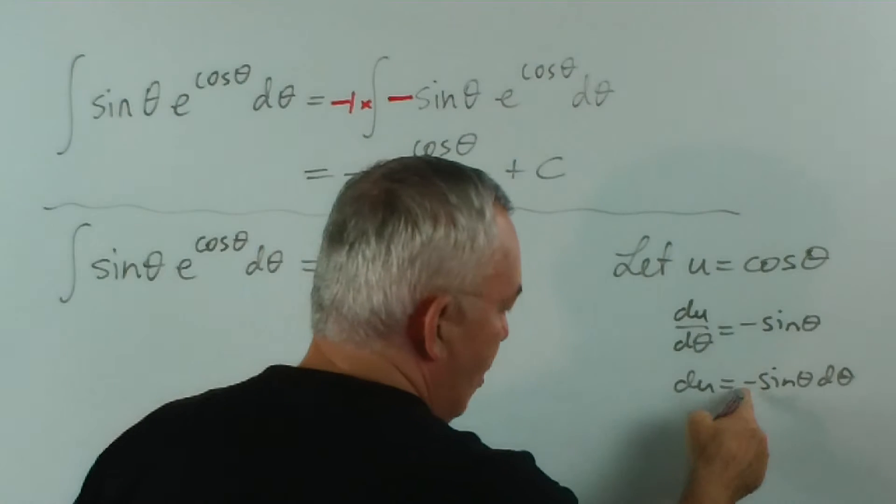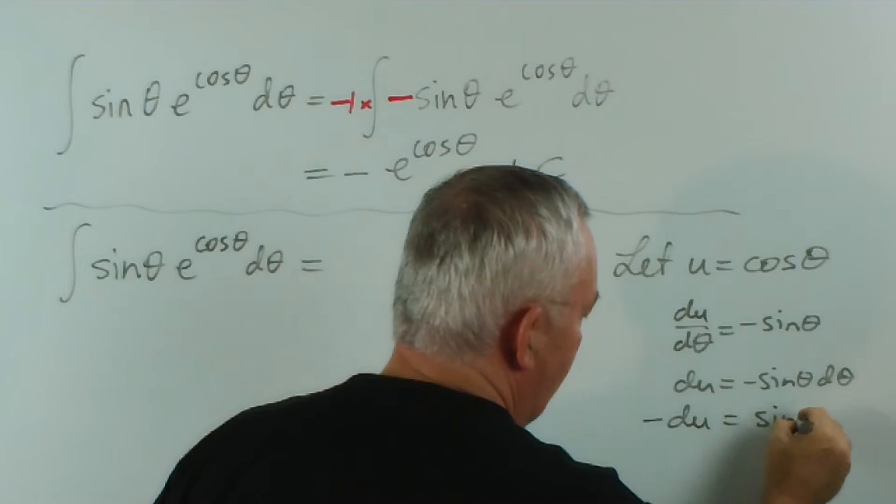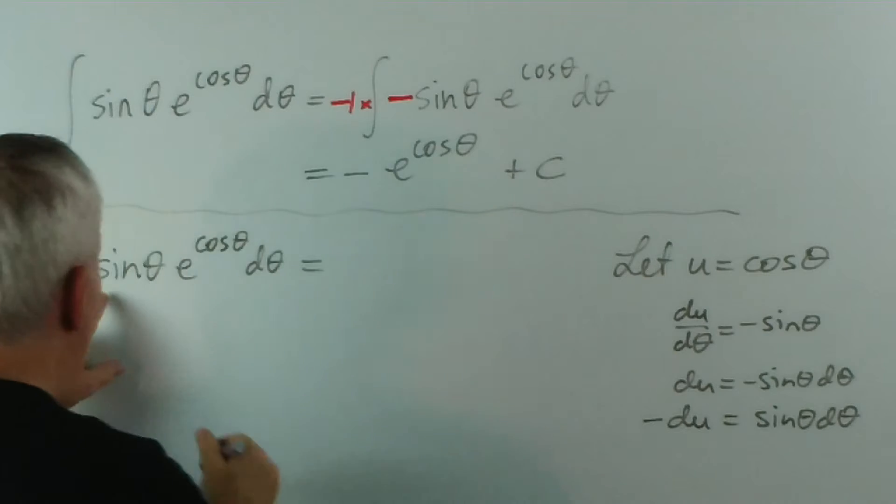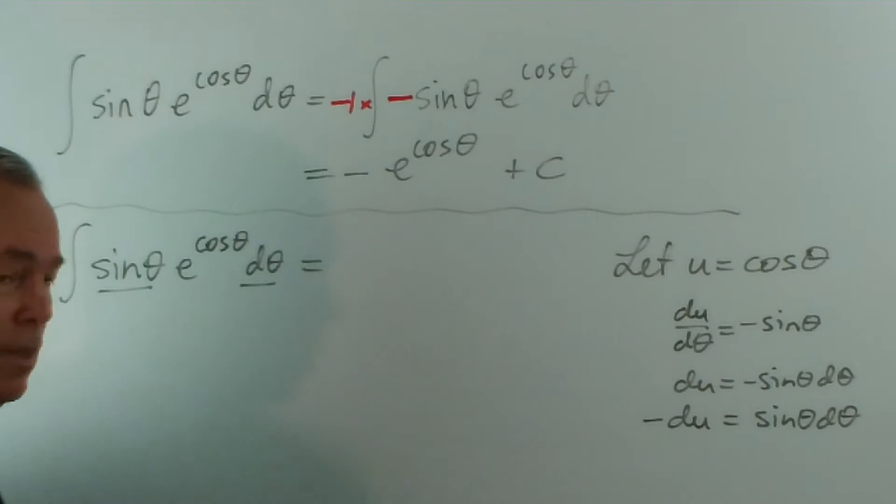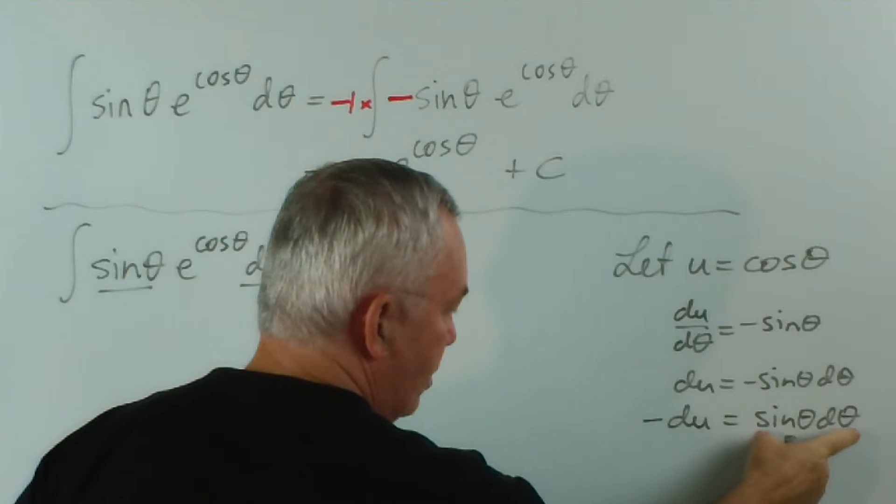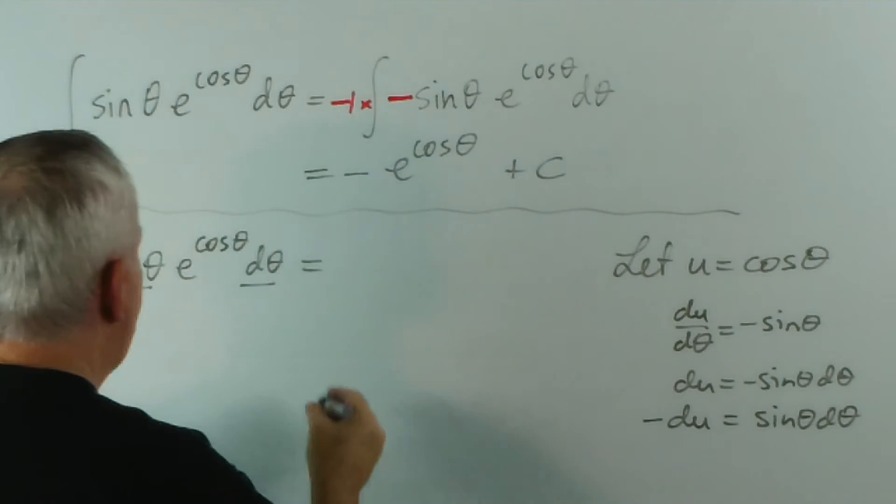Actually, if we multiply both sides by minus one, we get minus du equals sin theta d theta. Why did I do that? Because here we have a sin theta d theta with no minus sign. So I decided just to rearrange it. And we can now replace sin theta d theta with minus du.